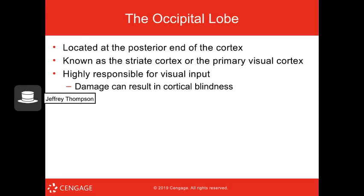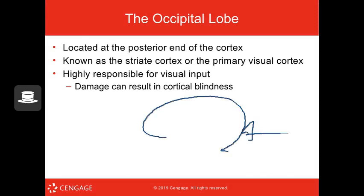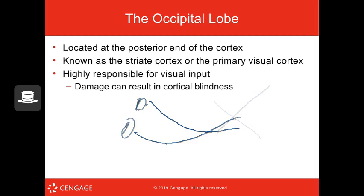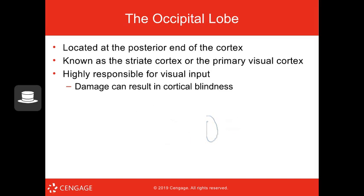The occipital lobe is at the posterior end of the cortex. It is also known as the striate cortex or primary visual cortex and is responsible for processing visual information. A hit to the occipital lobe can cause cortical blindness — your eyes still work but the brain can't properly interpret the signals. There is an optic chiasm where information from each eye partially crosses to the other side — we'll discuss that more later.